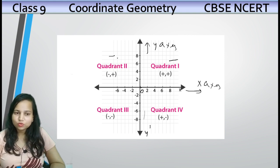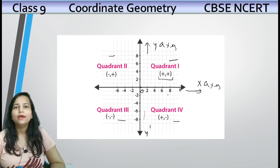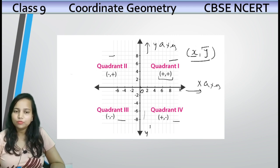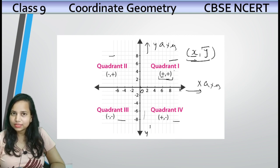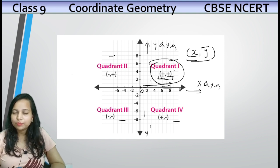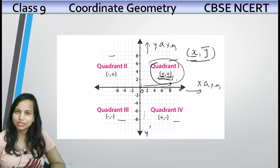This is the first quadrant, this is quadrant 2, quadrant 3, quadrant 4. Ab dekhein — quadrant 1 mein plus-plus likha hua hai. Plus-plus ka kya matlab hai? Jab hum coordinates find out karte hain, toh x ke coordinates pehle likhte hain, uske baad y ke. Quadrant 1 mein x-axis ke points: 0, 2, 4, 8 — only positive hain. Aur y ke points bhi: 2, 4, 6, 8 — positive hain. Toh quadrant 1 mein x and y coordinates plus-plus hote hain.